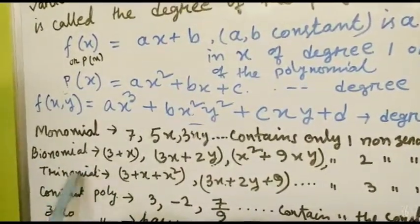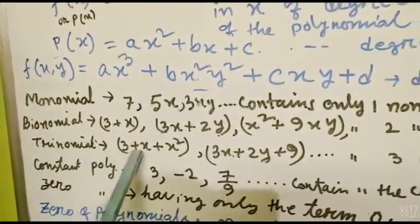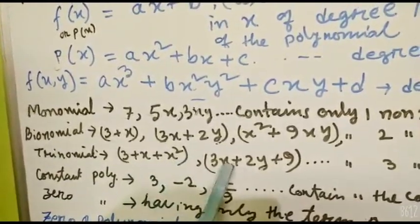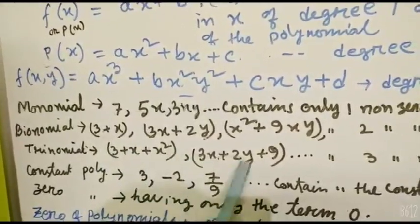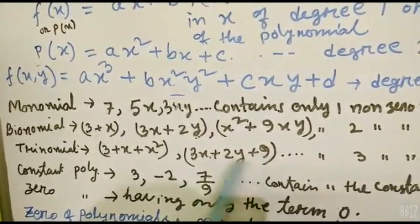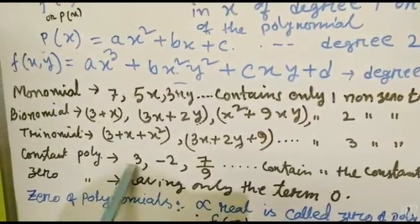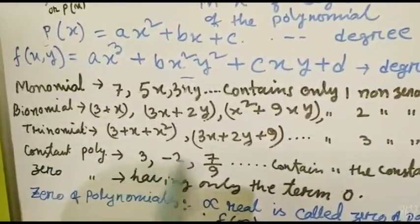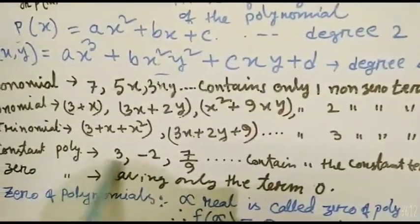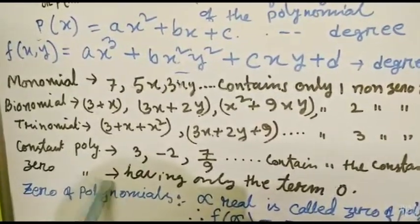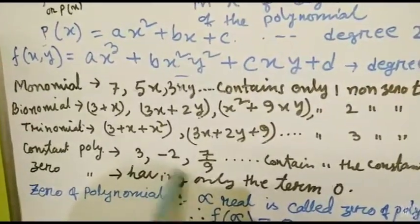Trinomial — examples: 3 + x + x², 3x + 3y + 9 — how many terms are there? 1, 2, 3 — three non-zero terms, so it is called trinomial. If there is no variable, only constant values such as 3, -2, 7/9, then it is called a constant polynomial. Similarly, a polynomial having only the term 0 is called a zero polynomial.